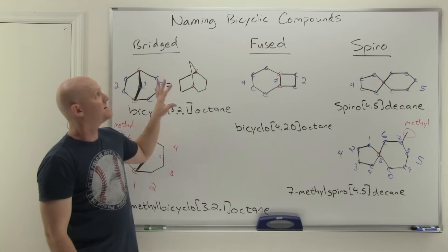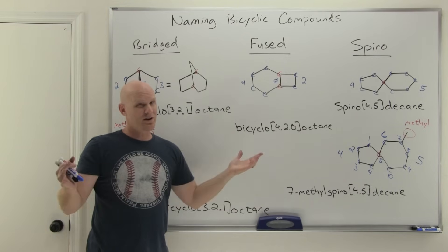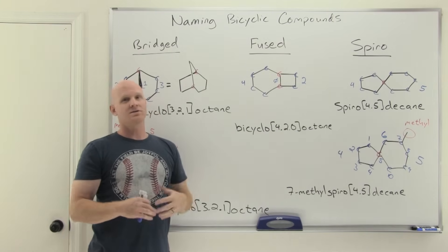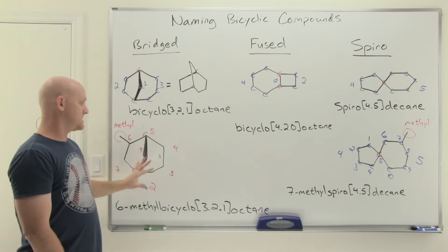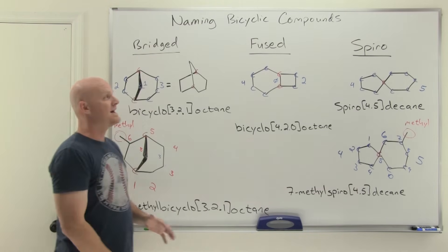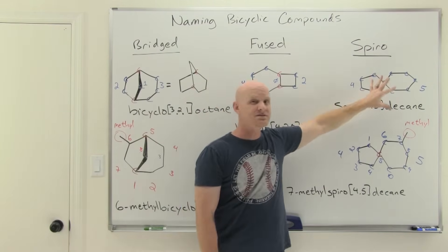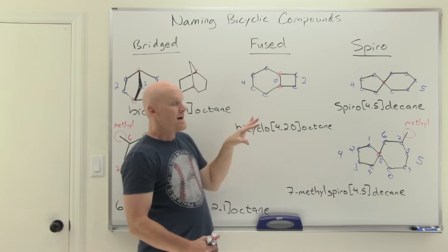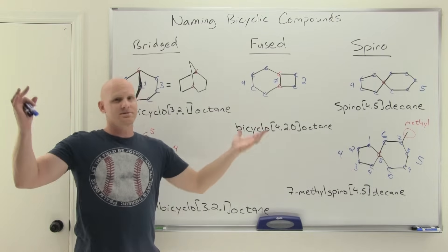That's all there is to naming bicyclic compounds. Not all students will get this as part of their curriculum — some books and professors include it, some don't. A lot of professors will include bridged and fused but leave out the numbering system for substituents entirely, and many leave out spiro compounds. This is of lesser importance than other nomenclature we've covered, but for some students you will need all of this.